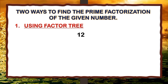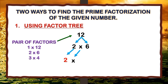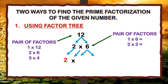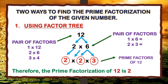Let us use the given number, which is 12. The first thing that we should do is to list down all the pair of factors of 12. Then we will get just one pair — 2 times 6. 2 is a prime number while 6 is a composite number. Since 2 is a prime number, we write it down with the multiplication symbol. For number 6, we list all the pair of factors and get 2 times 3. Therefore, the prime factorization of 12 is 2 times 2 times 3.